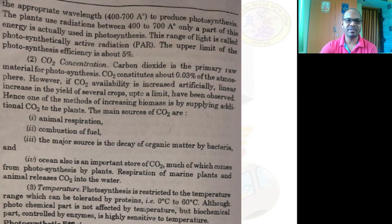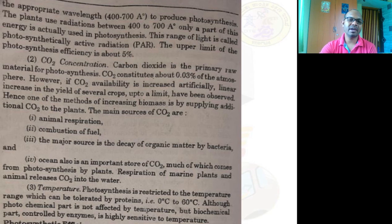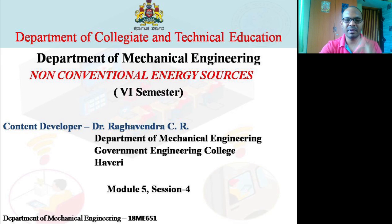Third condition: temperature. Photosynthesis is restricted to the temperature range that proteins can tolerate — 0 to 60 degrees Celsius. Although the photochemical part is not affected by temperature, the biochemical part controlled by enzymes is highly sensitive to temperature. These are the important factors that greatly influence photosynthesis, which in turn affects biomass production.